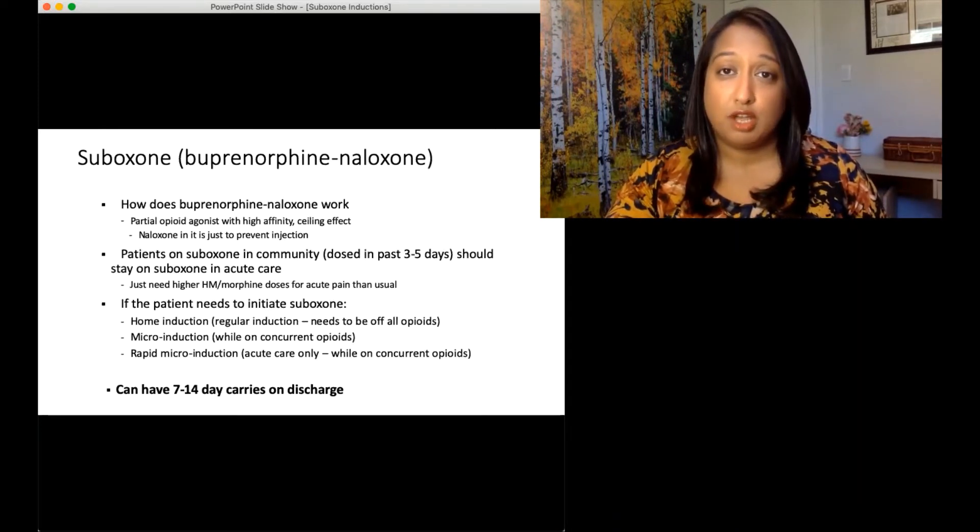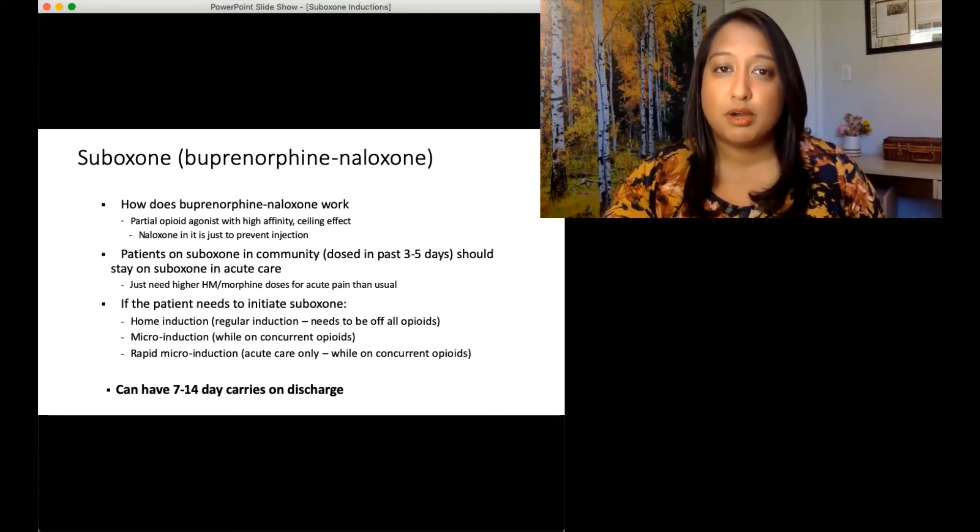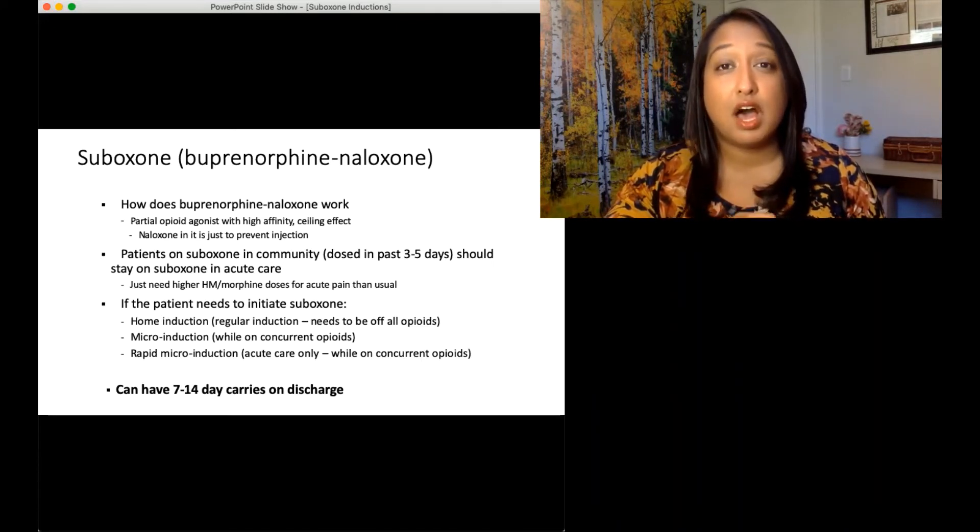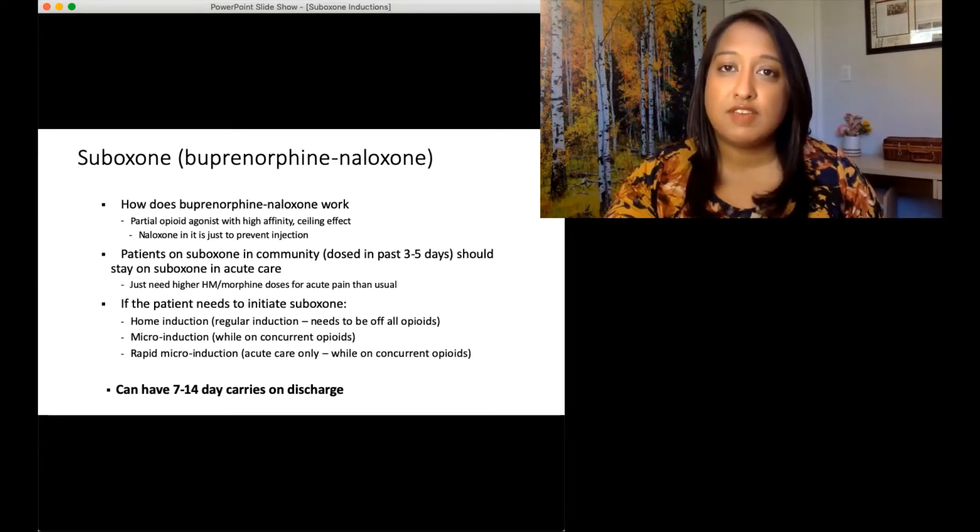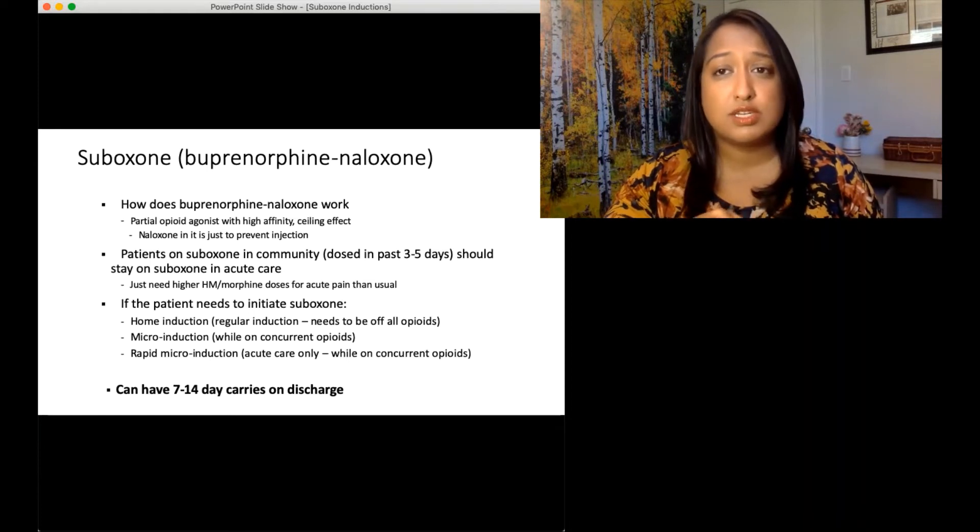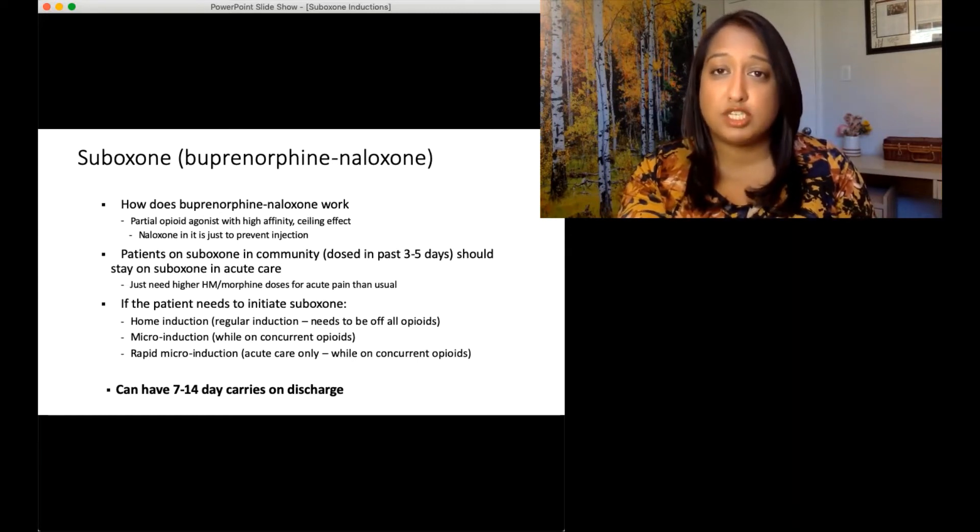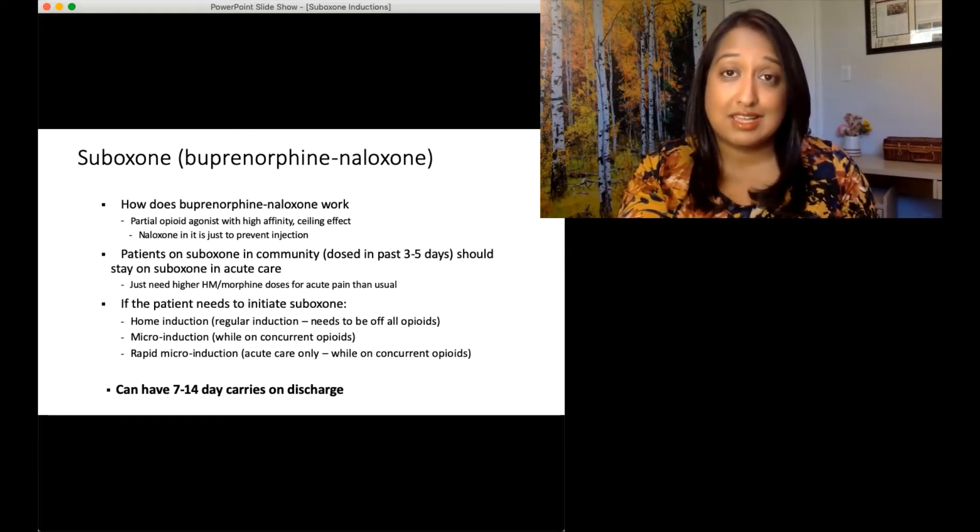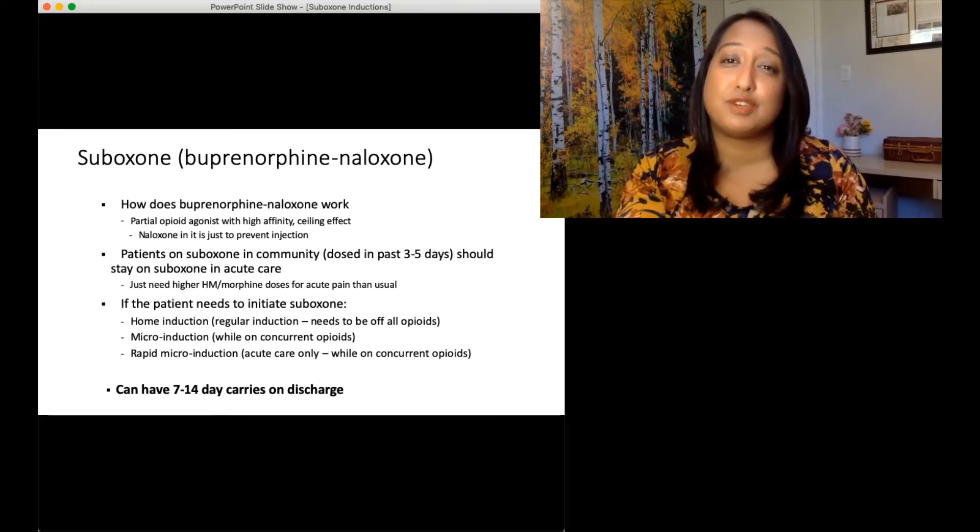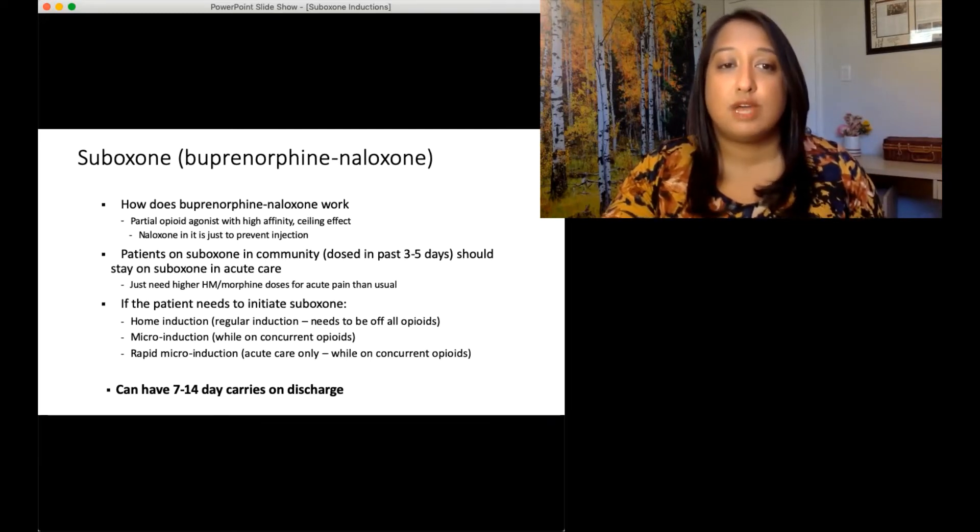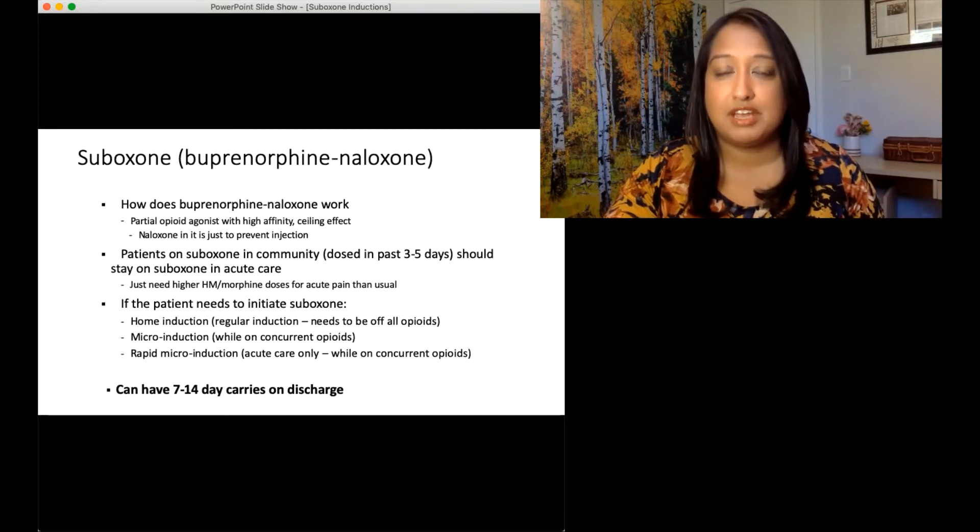Let's talk about buprenorphine-naloxone, also known as Suboxone. The way that buprenorphine works is that it's a partial opioid agonist with a high affinity to the opioid receptors. It also has a ceiling effect for respiratory depression. Naloxone is just in the Suboxone to prevent injection, like diversion of the Suboxone. So if you injected Suboxone, the naloxone in it essentially acts as naloxone would and reverses the opioids.